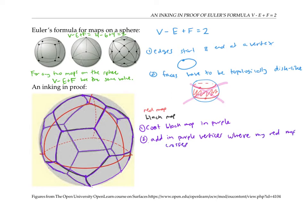Now I'm going to add in purple vertices where my red map crosses my purple map. So let's start by filling in this vertex right here. And let's see what happens to the number of vertices, edges, and faces. Well, vertices clearly goes up by 1. And the edges also goes up by 1, because I've replaced where I used to have just one edge, I now have two edges.